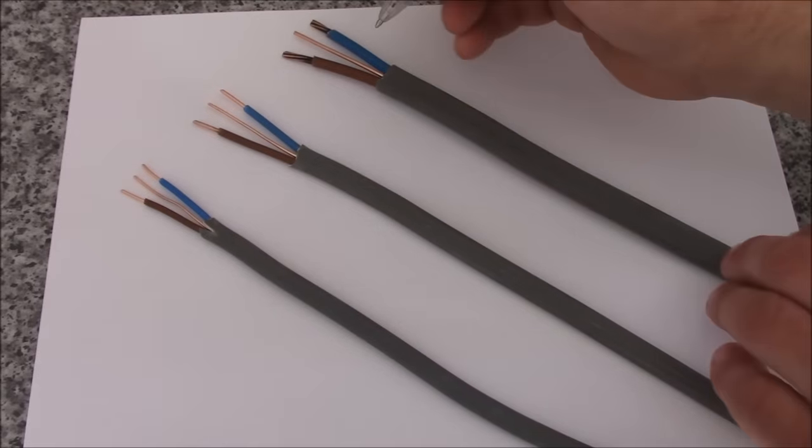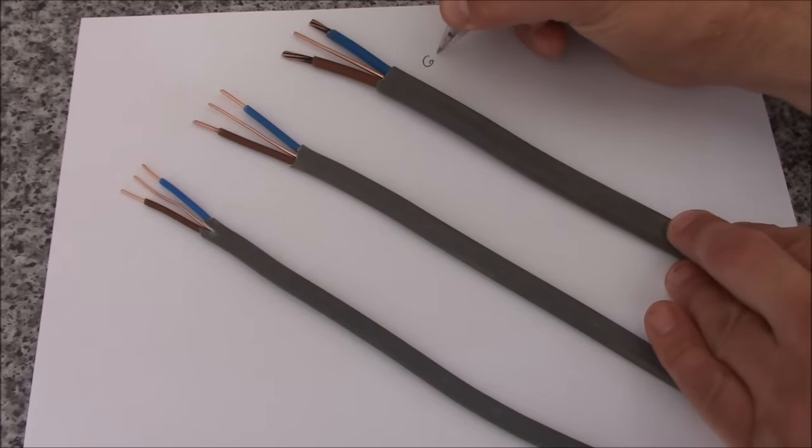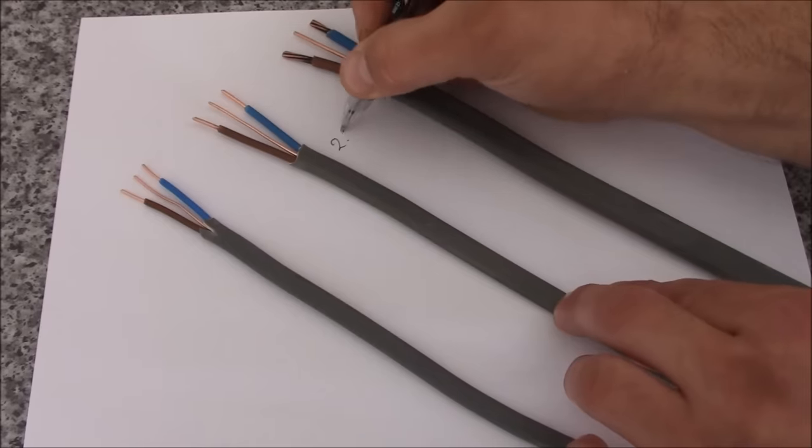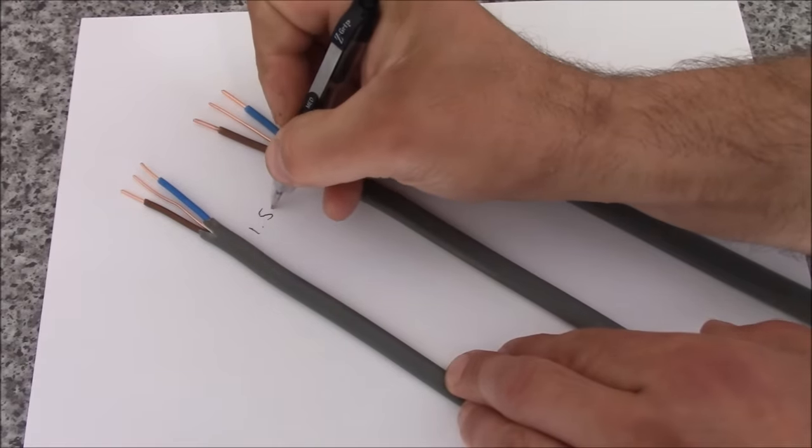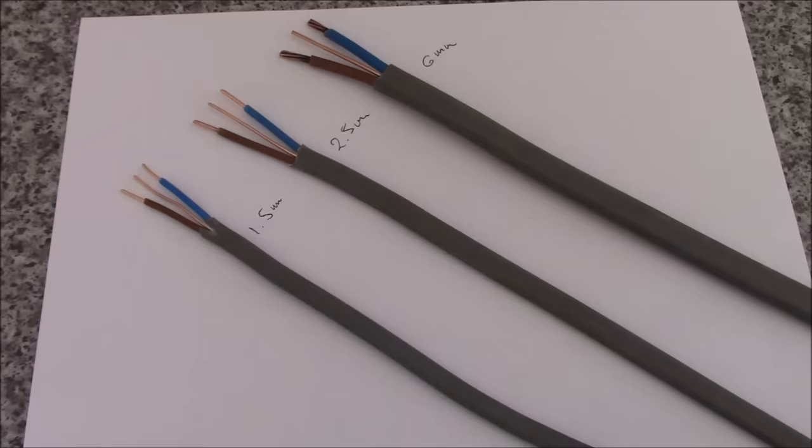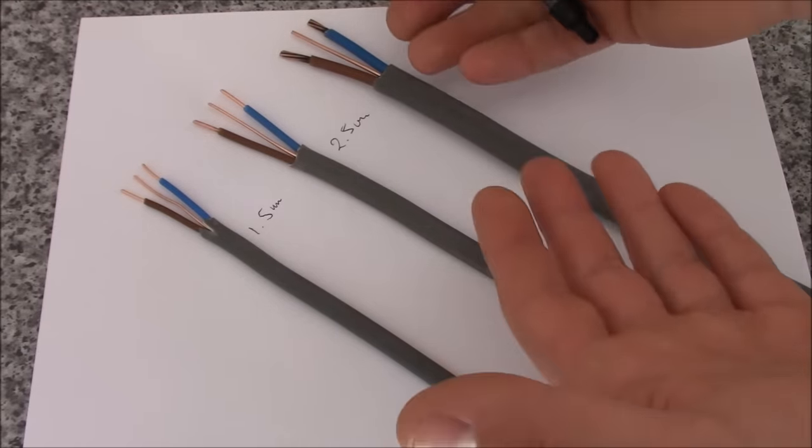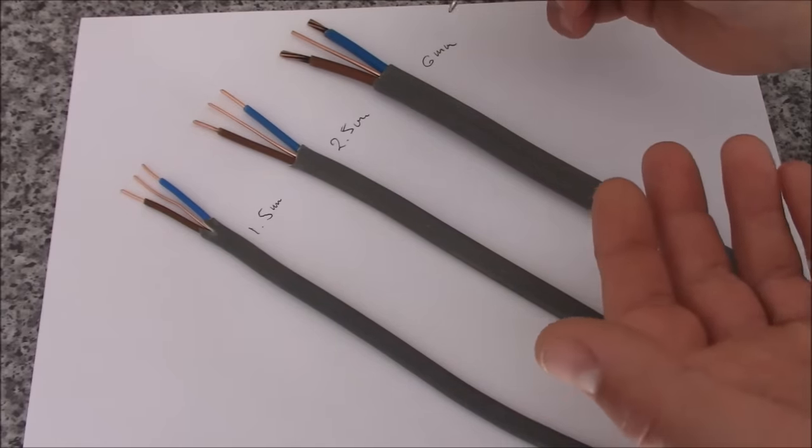So I've got here three cables, each different size. This one is 6 mm, this one is 2.5 mm and this one is 1.5 mm. And all the cables have got their own rating, depending on the size. So this is called current carrying capacity.